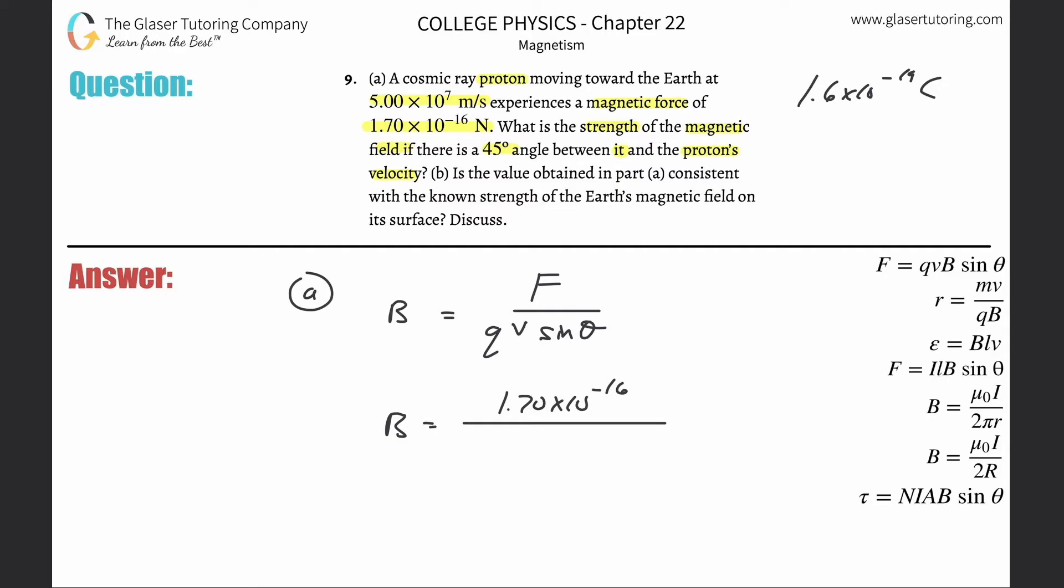The charge of a single electron then is just negative this 1.6 times 10 to the minus 19. Now, when you plug in your Q value in this formula, I don't know why the text doesn't have it, but it's technically the absolute value. So don't plug in the signs here for Q. Just plug in the magnitude because the signs have nothing to do with the direction here on these problems.